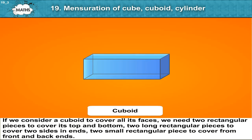If we consider a cuboid to cover all its faces, we need two rectangular pieces to cover its top and bottom, two long rectangular pieces to cover two sides in ends, two small rectangular pieces to cover from front and back ends.